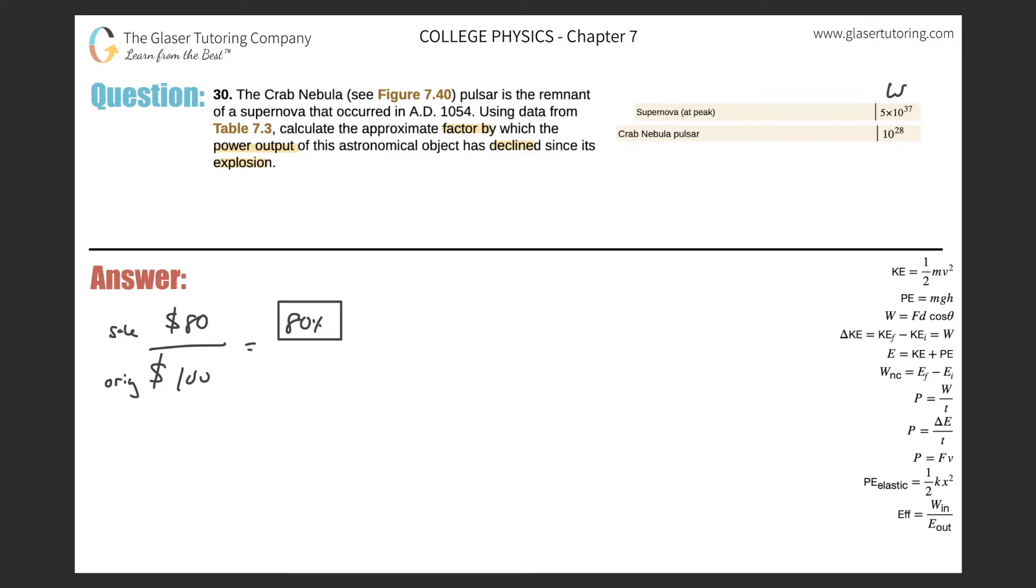So we take the price it is at today divided by its original price, and then we just turn it into a percent by multiplying it by 100. It's the same process here.